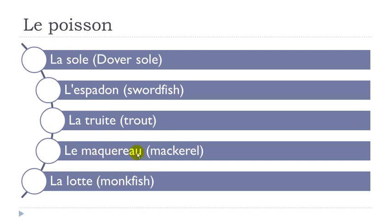Le maquereau — so technically this Q, just pronounce it: mac, maquereau. And then E, R, U — remember when you combine these three vowels, you get the sound O. Maquereau. And then la lotte — final E not pronounced. Lotte, t. La lotte.